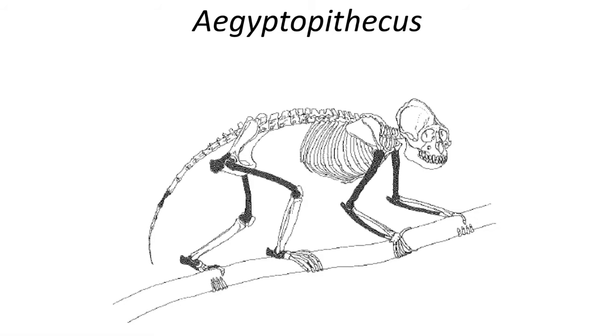The fossil record of apes extends back into the late Oligocene and early Miocene of Africa and the Middle East, with fossil apes known from Africa, Europe, and Asia beginning around 25 million years ago. The early Oligocene fossil primate Aegyptopithecus from Egypt was a derived arboreal quadrupedal catarrhine monkey, which featured tall sagittal crests on its skull and a reduced snout.